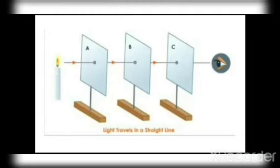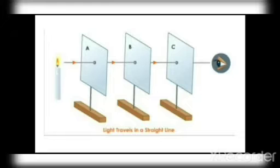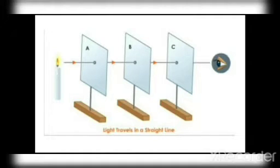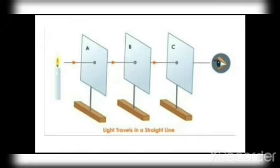How is this possible? Because light always travels in a straight line. If light were to travel in a wave or any irregular manner, I would not be able to see the candle from behind cardboard sheet C. Since light has the property of always traveling in a straight line, the light source is visible to me through all the holes.